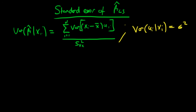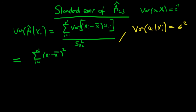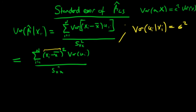So how does that help us in our above equation? Well, that means we can write the above equation like this. It's just the sum from i equals 1 to n of x_i minus x-bar, which becomes squared because the variance of some number a times some random variable x is equal to a squared times the variance of x. Note that x_i and x-bar are not random variables because we're thinking about them as being either non-stochastic or fixed in repeated samples. So we're left with the sum of (x_i minus x-bar) all squared times the variance of u_i, all divided by S_xx all squared.